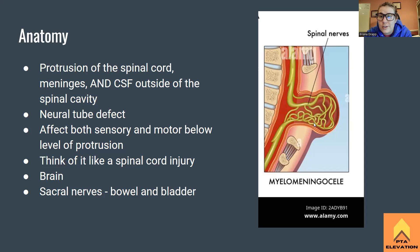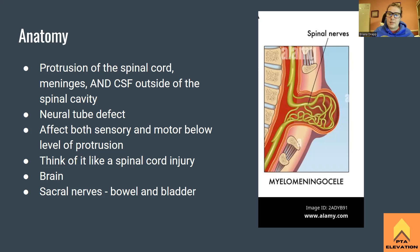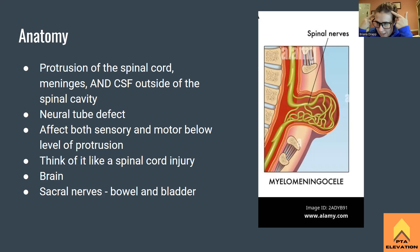So if the lesion is at the L2 level, you're not going to be able to dorsiflex; you can hip flex a little bit, but not dorsiflex. You'll lose sensory and motor function below the level of the protrusion. It's going to affect the brain because the CSF — cerebro meaning brain, spinal meaning spinal column — washes through the brain and spinal cord. With this protrusion, there's extra CSF floating around, which is why we see hydrocephalus.